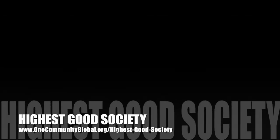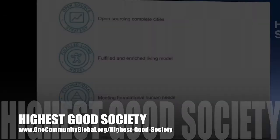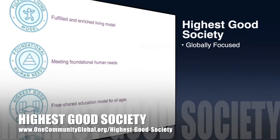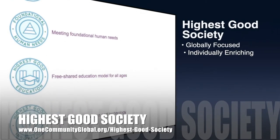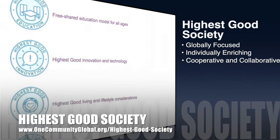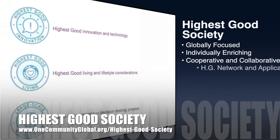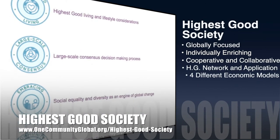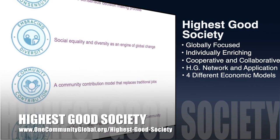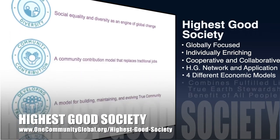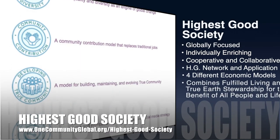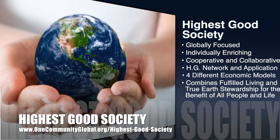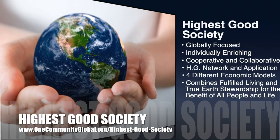The One Community approach to Highest Good Society is globally focused, individually enriching, cooperative and collaborative, includes a Highest Good network and application, four different economic models, and combines fulfilled living and true earth stewardship for the benefit of all people and all life on this planet.